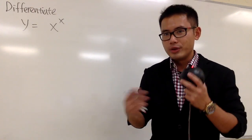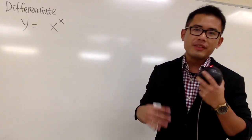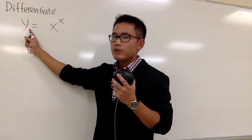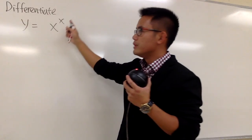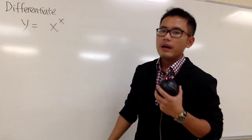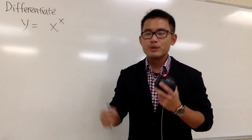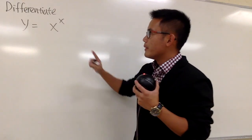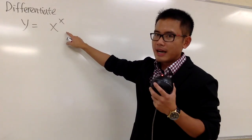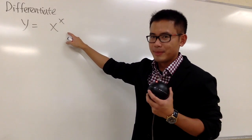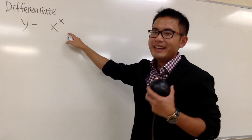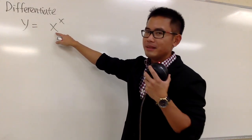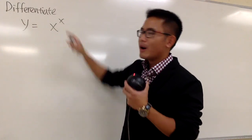The first way is more of the traditional, textbook way. First I'm going to say y is equal to x to the x power, and we are going to find dy/dx, or y prime. Here's the trouble — this is not a polynomial, this is not an exponential function. It's kind of like both, because we have the x in the base and also the x in the power.